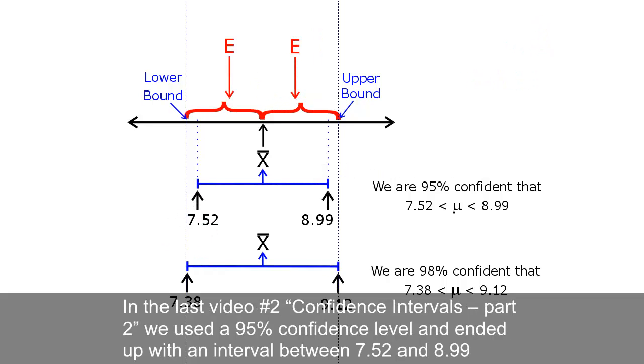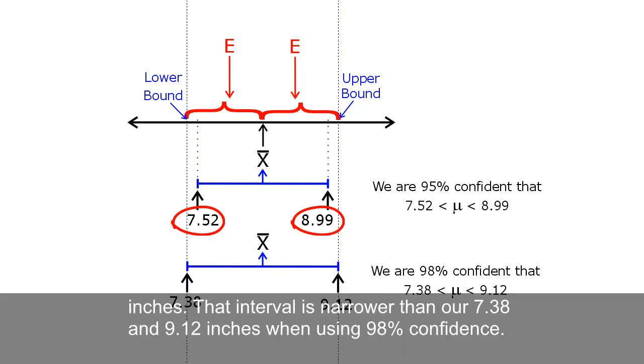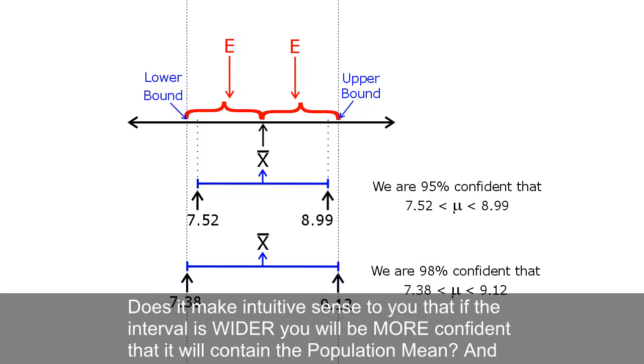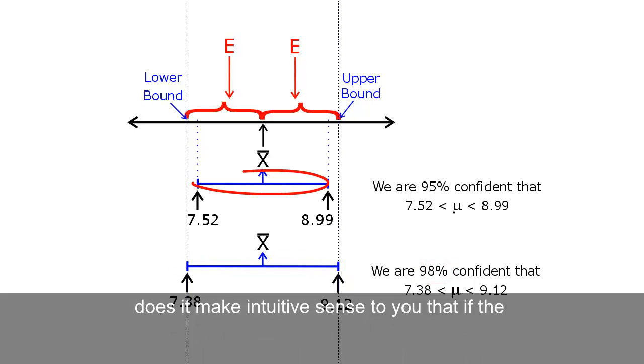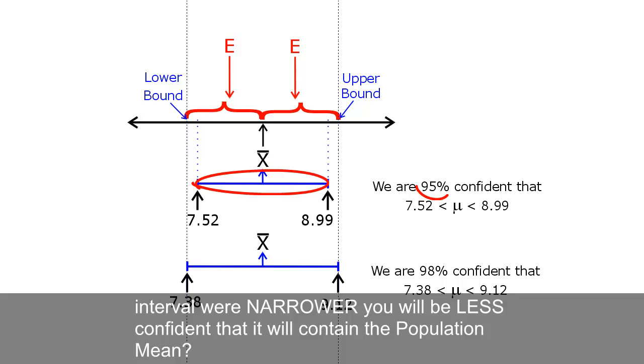In the last video number 2, confidence intervals part 2, we used a 95% confidence level and ended up with an interval between 7.52 and 8.99 inches. That interval is narrower than our 7.38 and 9.12 inches when using 98% confidence. Does it make intuitive sense to you that if the interval is wider, you will be more confident that it will contain the population mean? And does it make intuitive sense to you that if the interval were narrower, you will be less confident that it will contain the population mean?